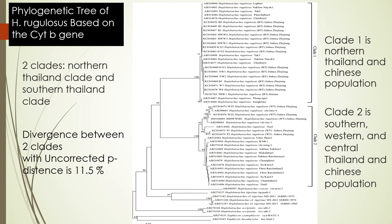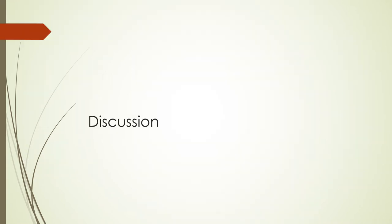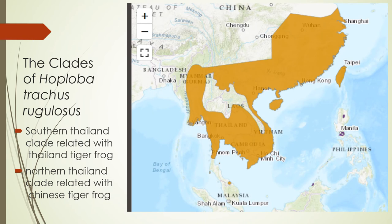This is the result of the cytB analysis. From the phylogenetic tree constructed from the cytB genes of Hoplobatrachus rugulosus, they found two clades. The first clade is the northern Thailand and Chinese population, while the second clade is the southern, western, and central Thailand and Chinese population. The divergence between the two clades is 11.5%. From this we can see that the northern Thailand and Chinese populations are in one clade, possibly because northern Thailand is geographically close to China, allowing some breeding. We refer to the southern Thailand clade as the Thailand tiger frog and the northern Thailand clade with the Chinese tiger frog.